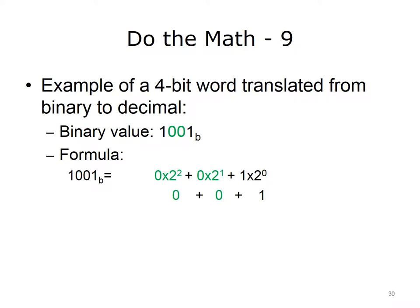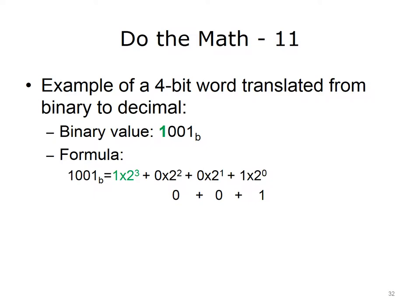Now our equation looks like this. Finally, move to the left where the very last bit is set to on. Add the value of 2 to the 3rd power — the decimal number 8 — to the running calculation. Therefore, the binary value 1001b (notice the subscript of b to indicate a binary number) has a decimal equivalent of 9.